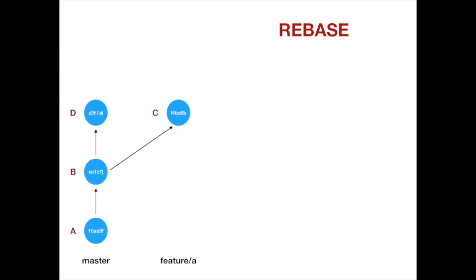Let's look at how rebase works. We will rebase the feature branch onto master. When rebase starts, it finds commits that exist in the feature branch but not in master — which is only C. After that, C's link to B as a parent commit is broken. These differing commits will be applied on top of commit D, as if they were newly committed, but they will stay in the feature branch no matter what. The rebase will not affect the master branch. Now C's parent becomes commit D.